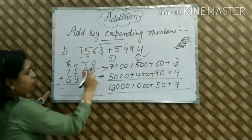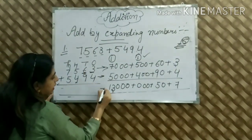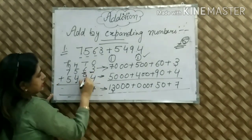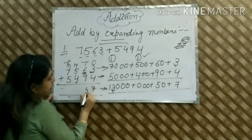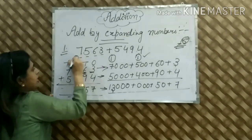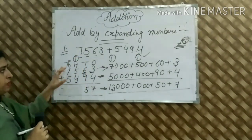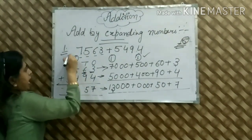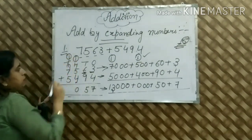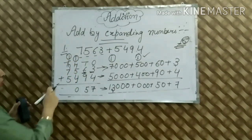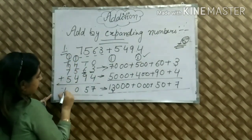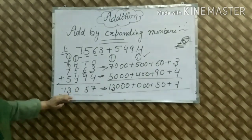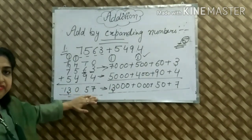Now we will put it in short form. 3 and 4 is 7. 6 and 9 is 15 — write 5 and carry 1. 5 and 4 is 9, plus 1 carry is 10 — write 0 and carry 1 to the thousands place. 7 and 5 is 12, plus 1 carry is 13. Our answer is 13,057.